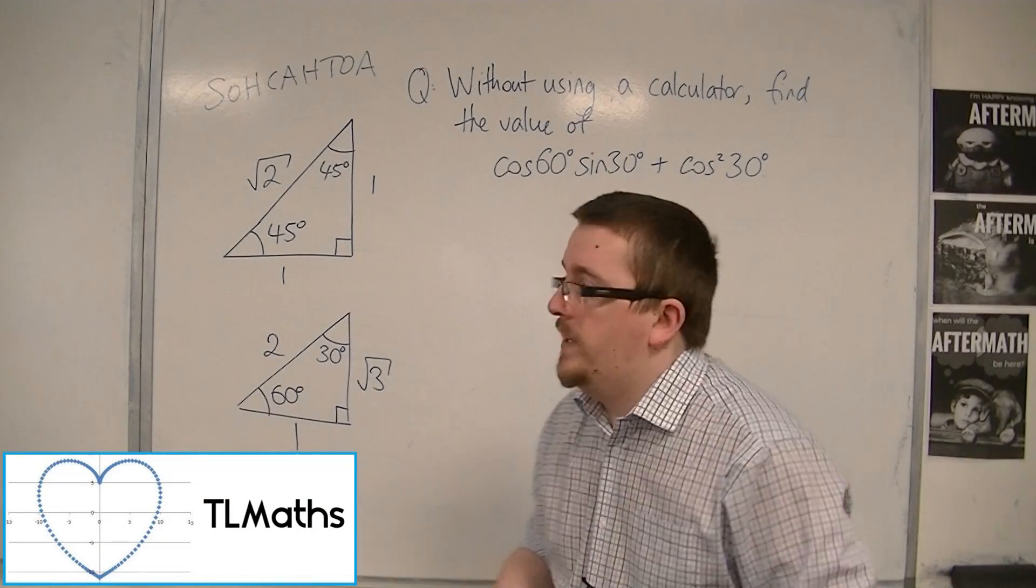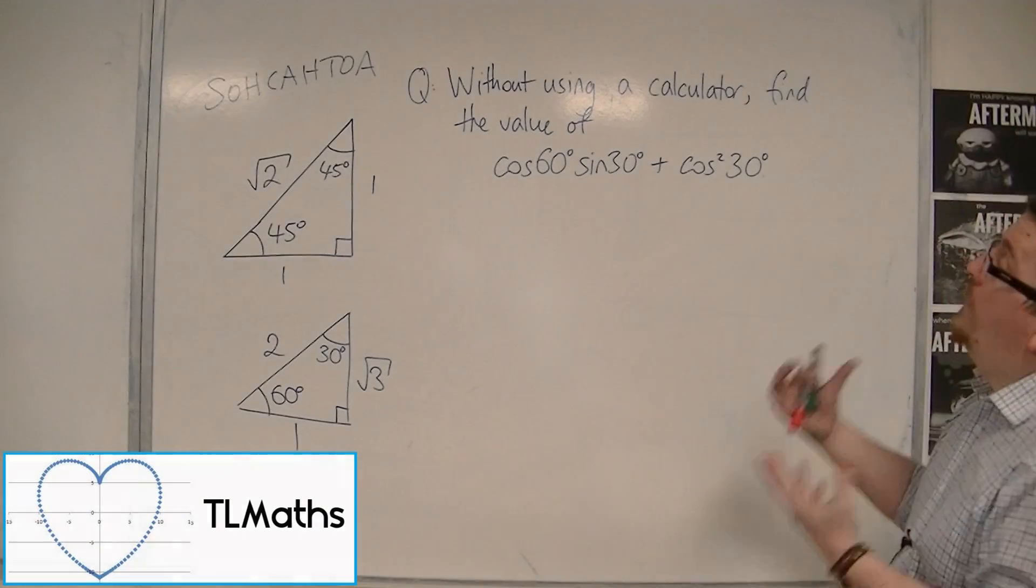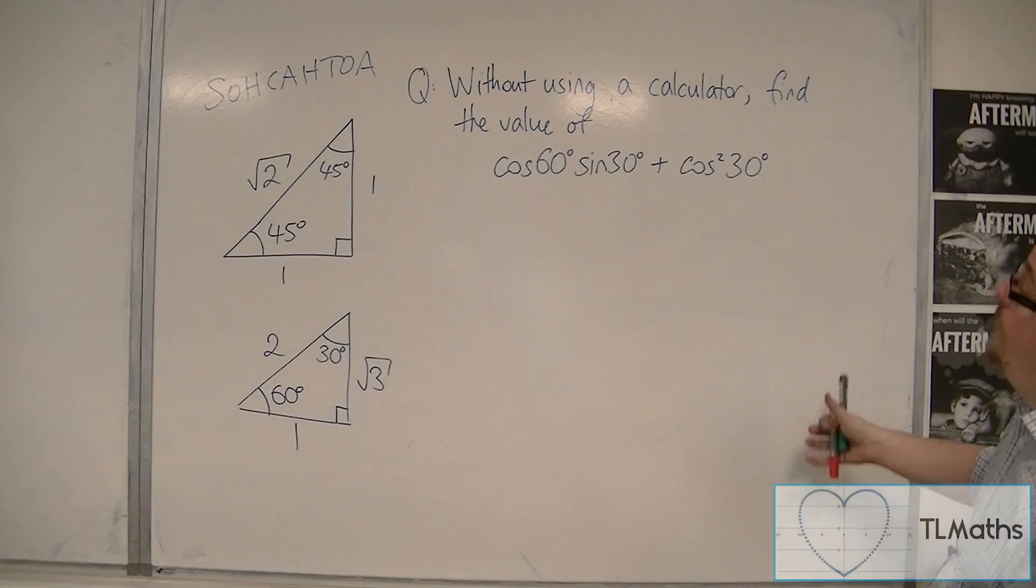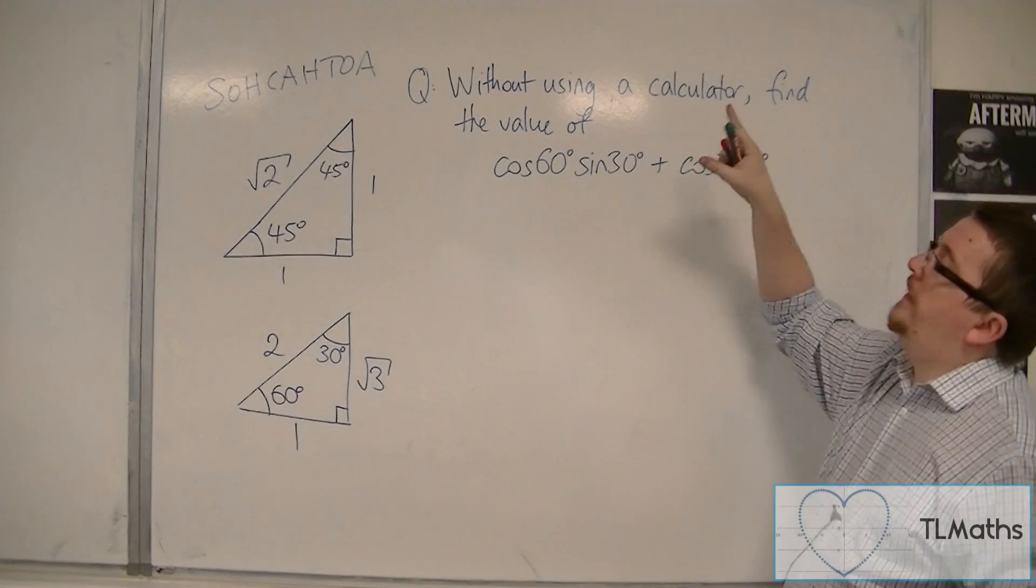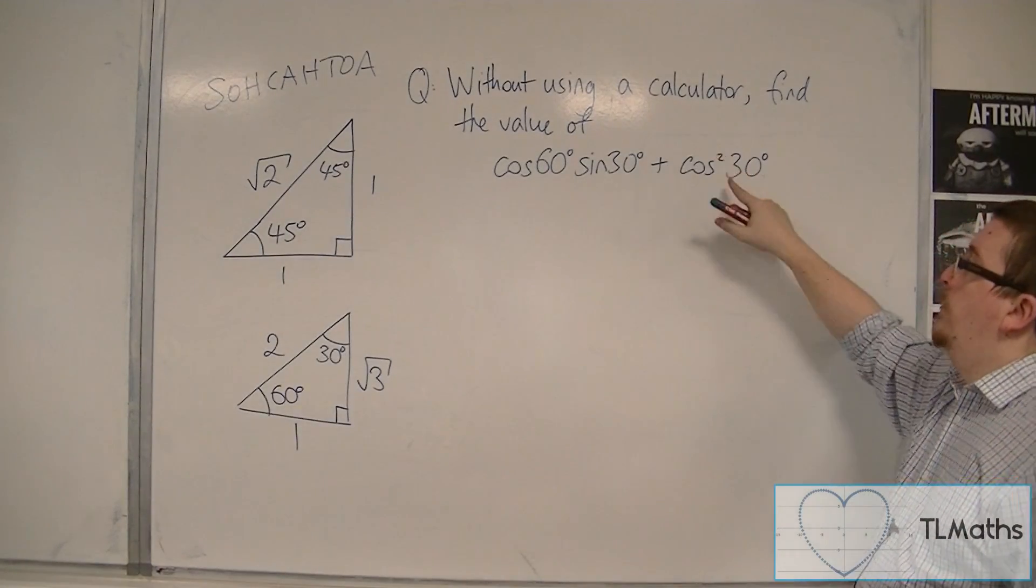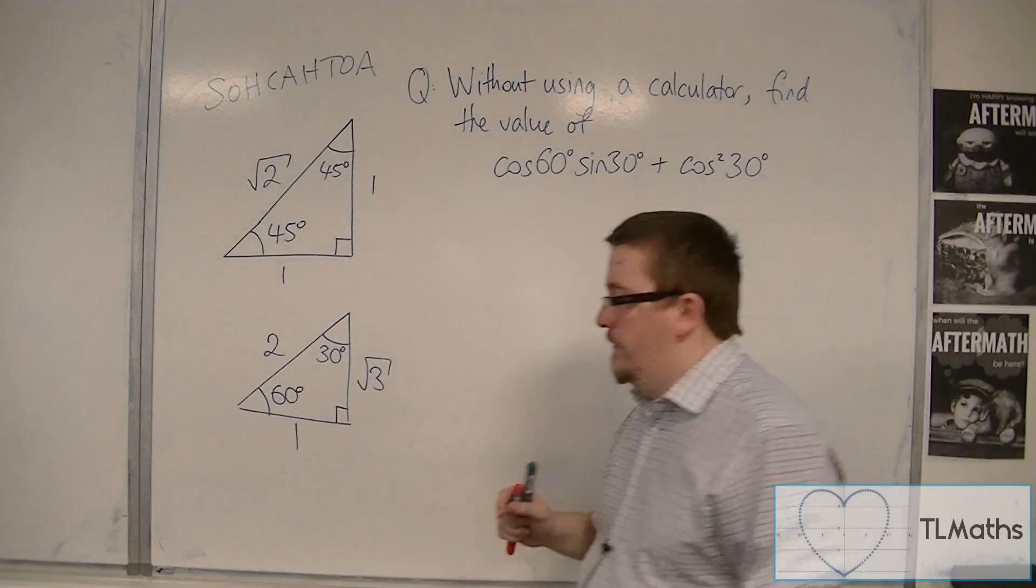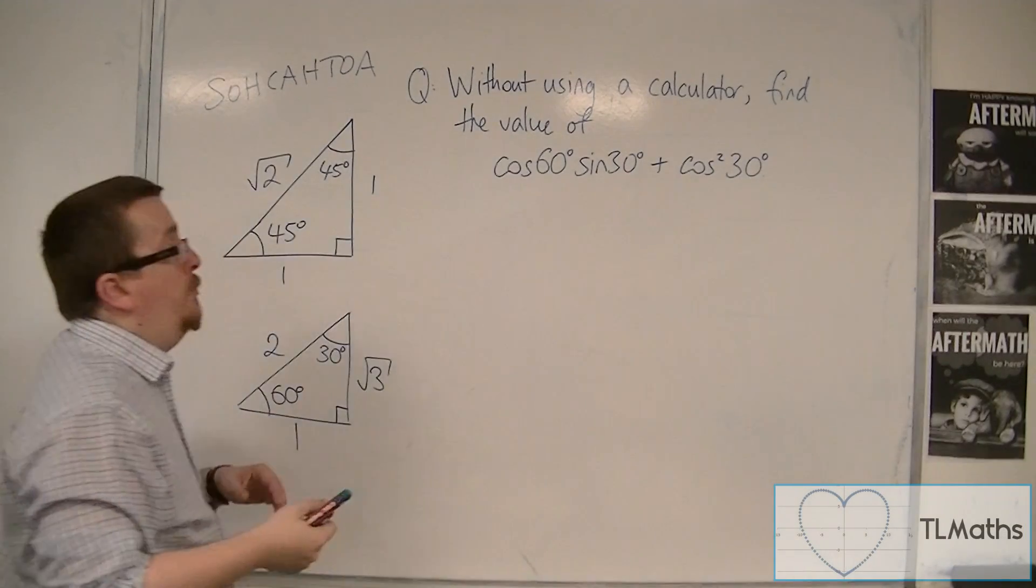So following on from the previous video, what we're going to do here is, without using a calculator, find the value of cos 60 times sine 30 plus cos squared 30. And we're going to use these two triangles.